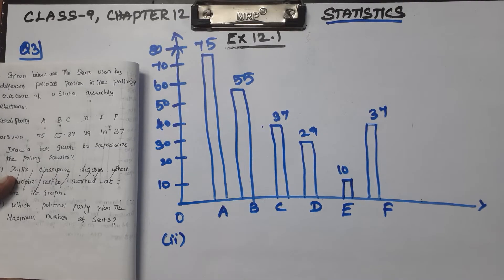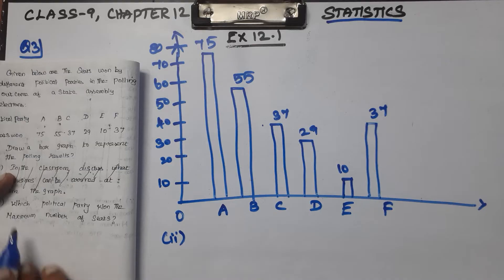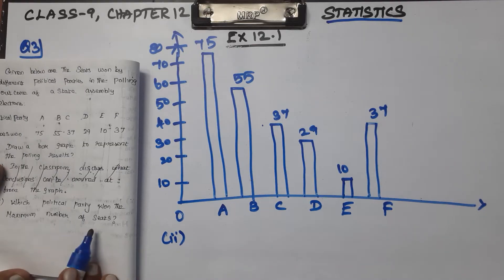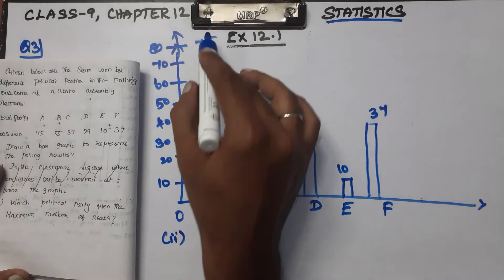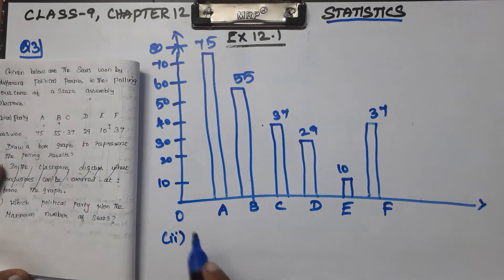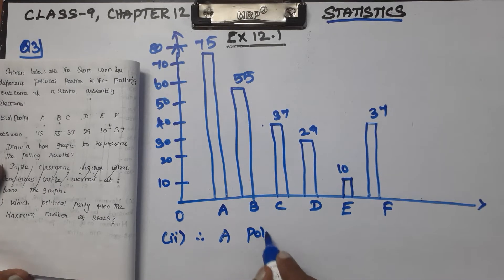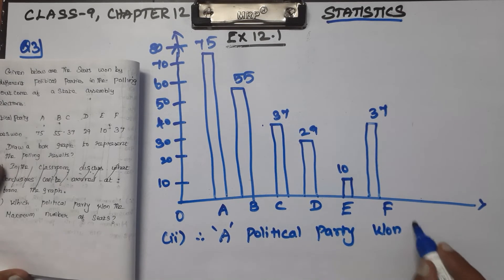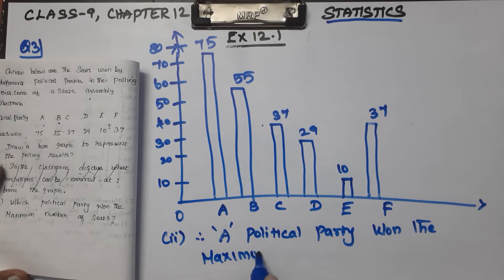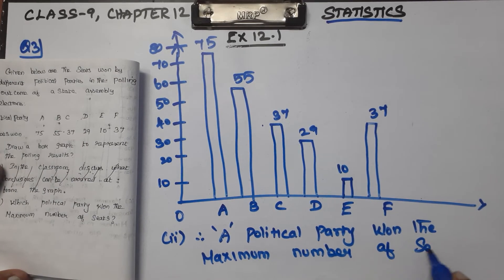Second question: Which political party won the maximum number of seats? The answer is 75 seats — party A. Therefore, political party A won the maximum number of seats.